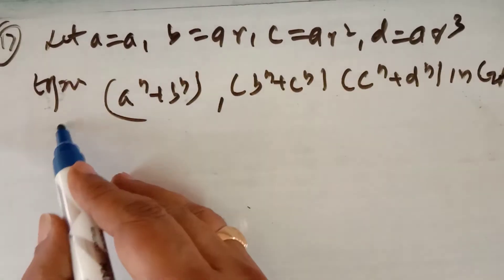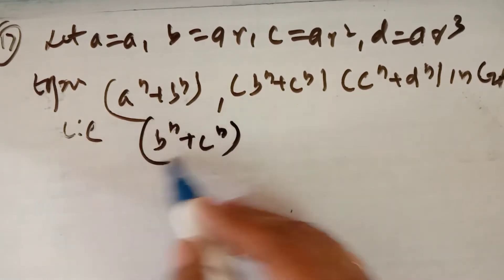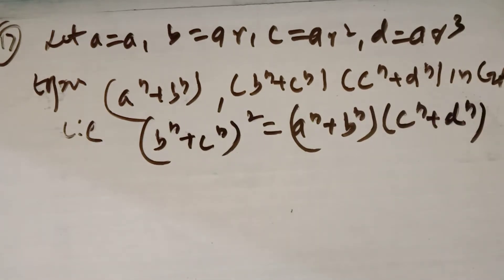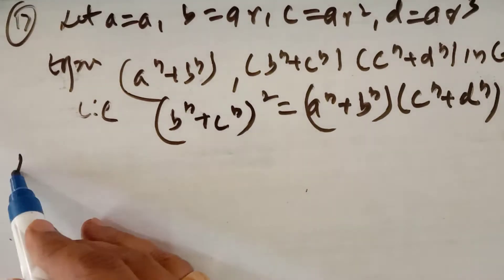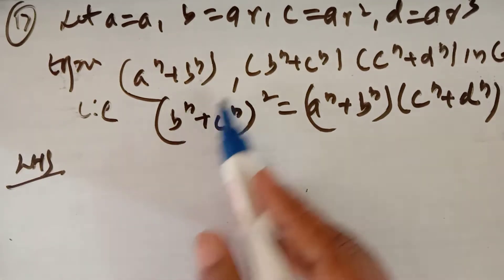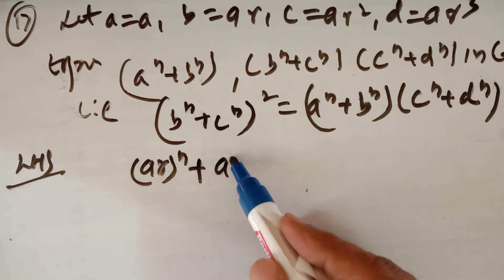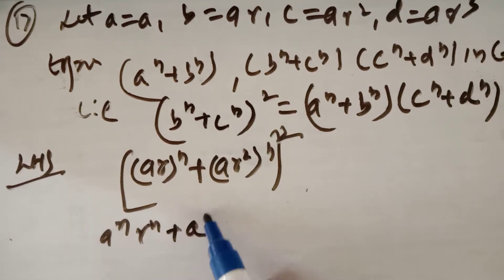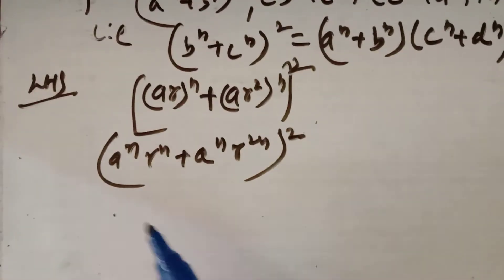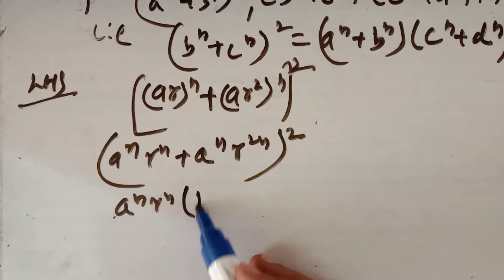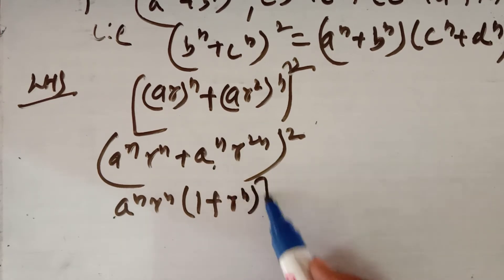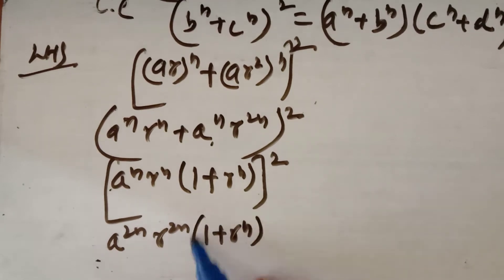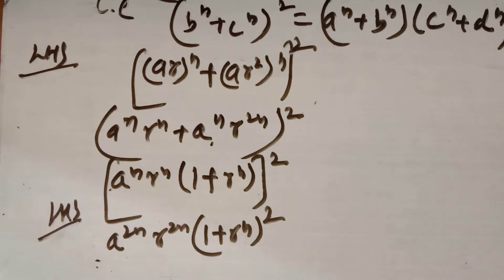To prove three terms are in GP, you have to prove that the square of the middle term equals the product of the outer terms, i.e., (bⁿ + cⁿ)² = (aⁿ + bⁿ)(cⁿ + dⁿ). Substituting on the left-hand side with b = ar and c = ar²: you get (arⁿ + ar²ⁿ)² = a^(2n) · r^(2n) · (1 + rⁿ)².